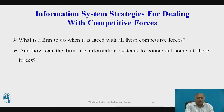Information strategies for dealing with competitive forces: what can the firm do when faced with all these competitive forces, and how can information systems help counteract some of these forces — preventing substitutes and inhibiting new market entrants? There are four generic strategies, each often enabled using information technology and systems: low cost leadership, product differentiation, focus market, and strengthening customer and supplier intimacy.